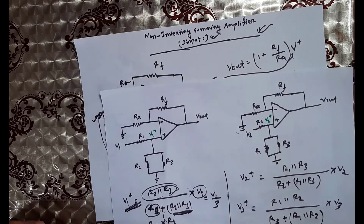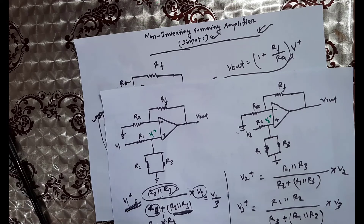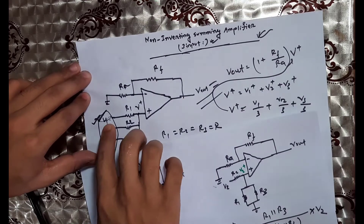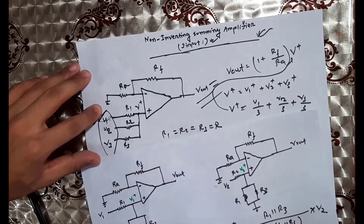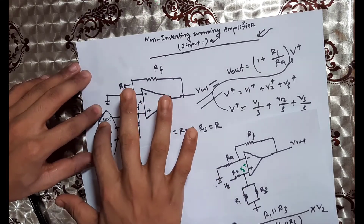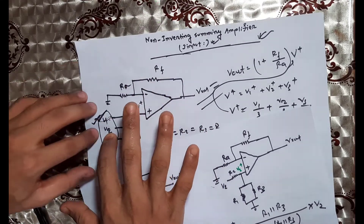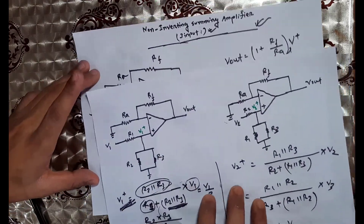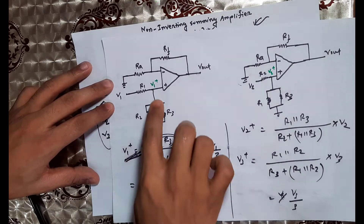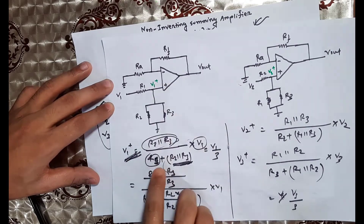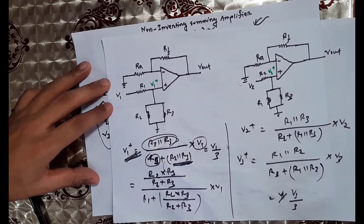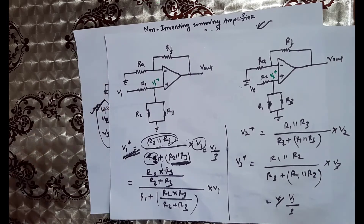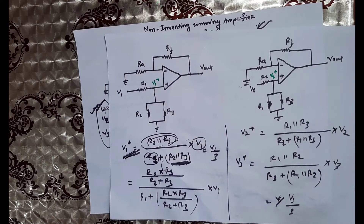We have derived the governing equations for the non-inverting summing amplifier. When V1, V2, and V3 are active with their respective resistances R1, R2, R3, we obtain the complete summing amplifier equations. This concludes the non-inverting summing amplifier topic.